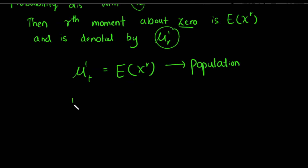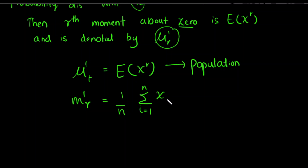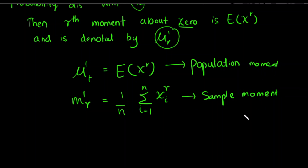We will define the simple sample moment mr'. The sample moment is: m_r' = (1/n) times the summation of i equals 1 to n of x to the power r. We then make the sample moment and the population moment. We will talk about the mean.